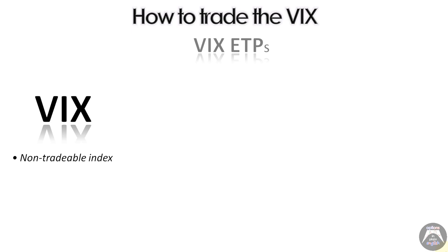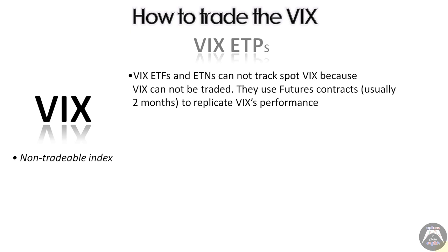They even have options on them. VIX ETFs and ETNs cannot track spot VIX because VIX cannot be traded — so they can't replicate it perfectly. They use futures contracts. To replicate the daily performance of VIX, these funds hold two different months or expirations of futures contracts in different ratios, and those ratios change every day through a daily roll — they come out of one futures contract and go into another to keep the proportion weighted to replicate VIX's 30-day measure.